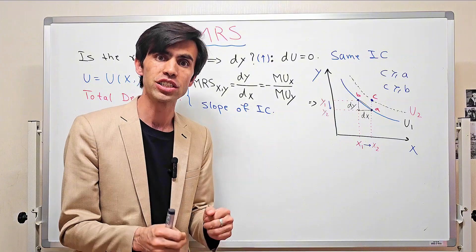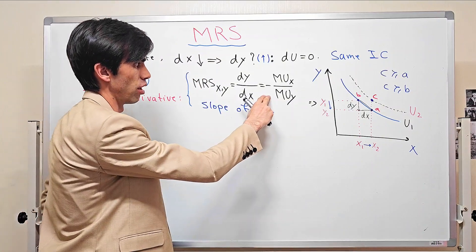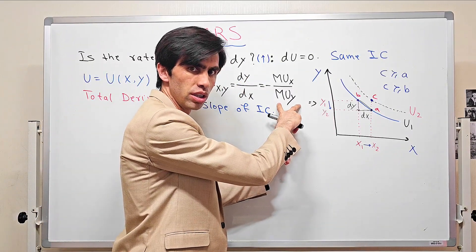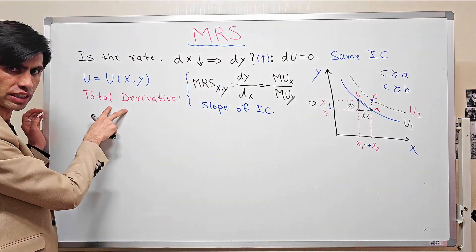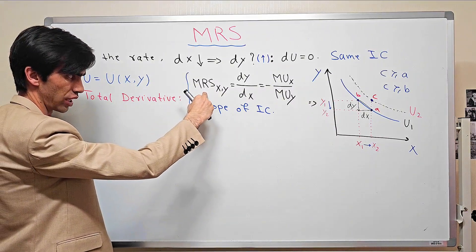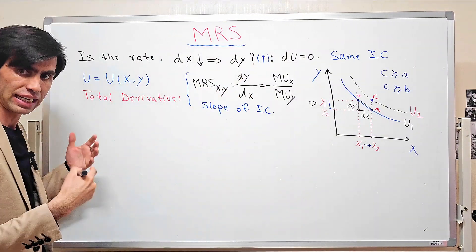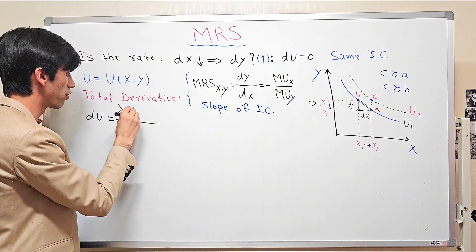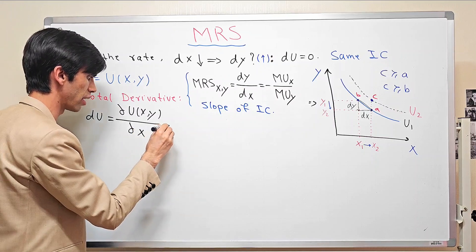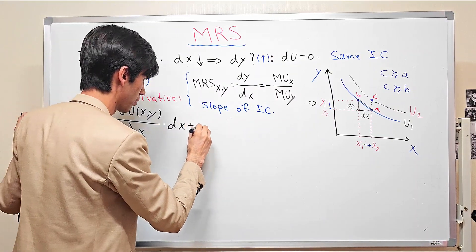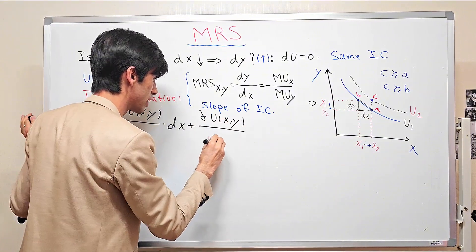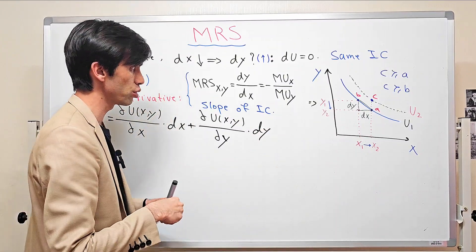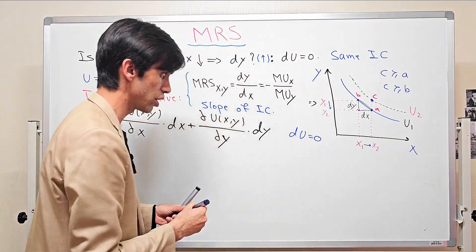So now, where did we get this formula? Why is the marginal rate of substitution of x for y equal to the change in y divided by the change in x, and why is this equal to minus marginal utility of x divided by marginal utility of y? By using the total derivative, we can derive the marginal rate of substitution. The total derivative says that the change in utility du is equal to the partial derivative of u(x,y) with respect to x multiplied by the change in x, plus the partial derivative of u(x,y) with respect to y multiplied by the change in y.